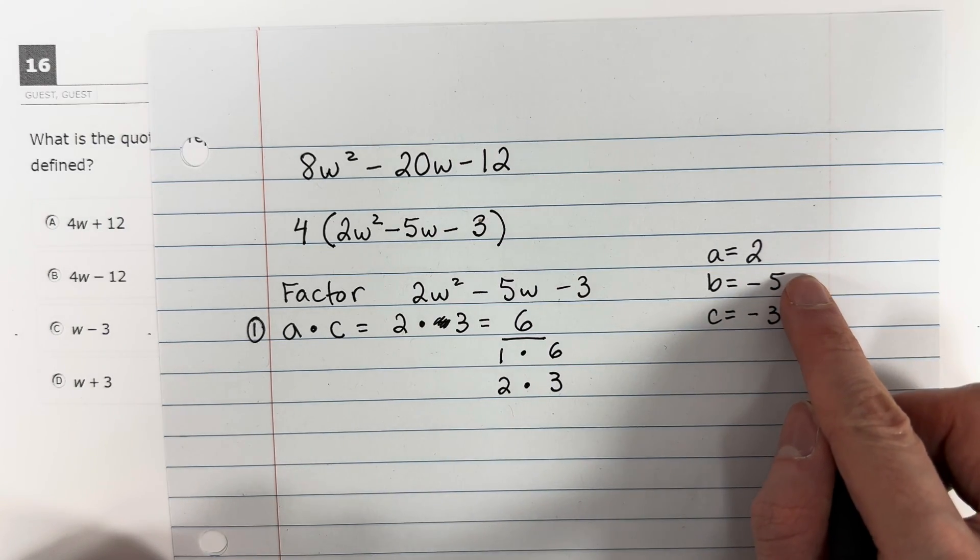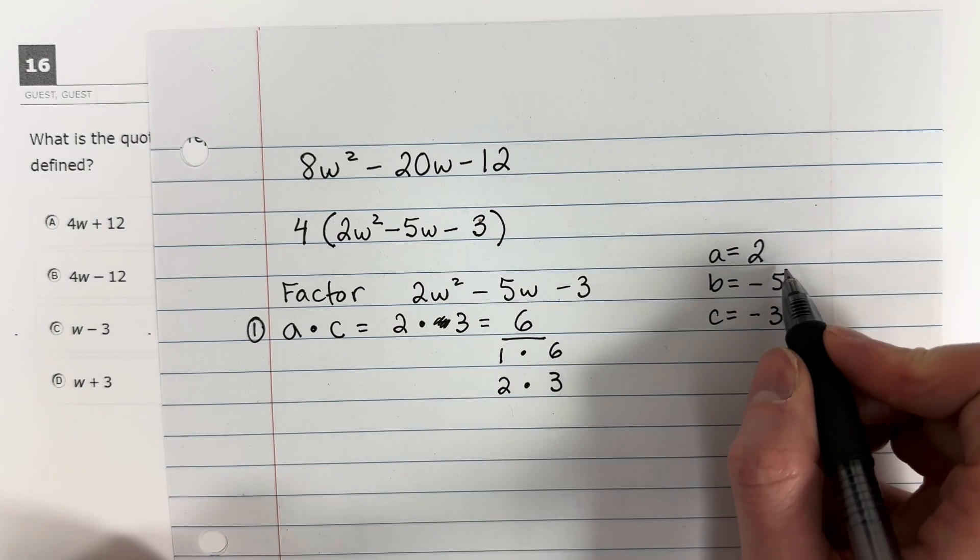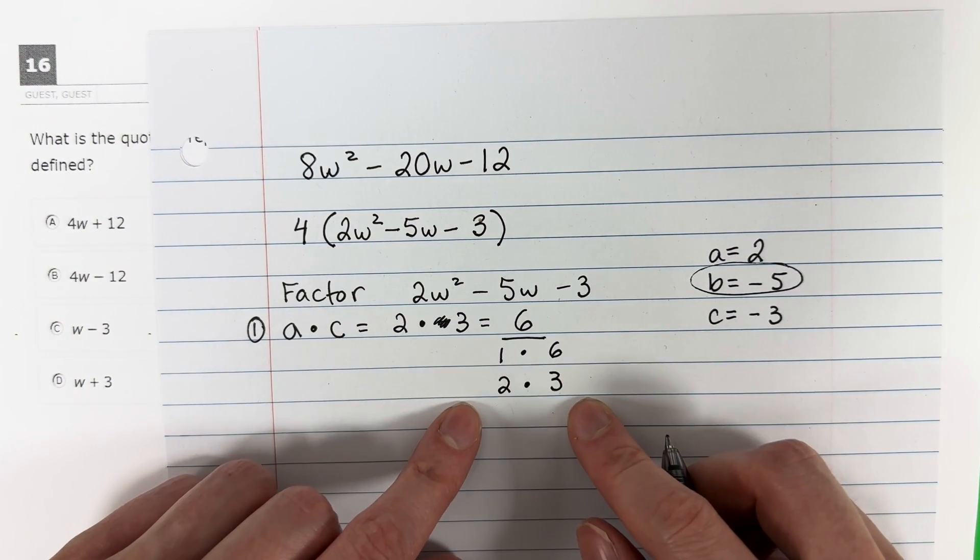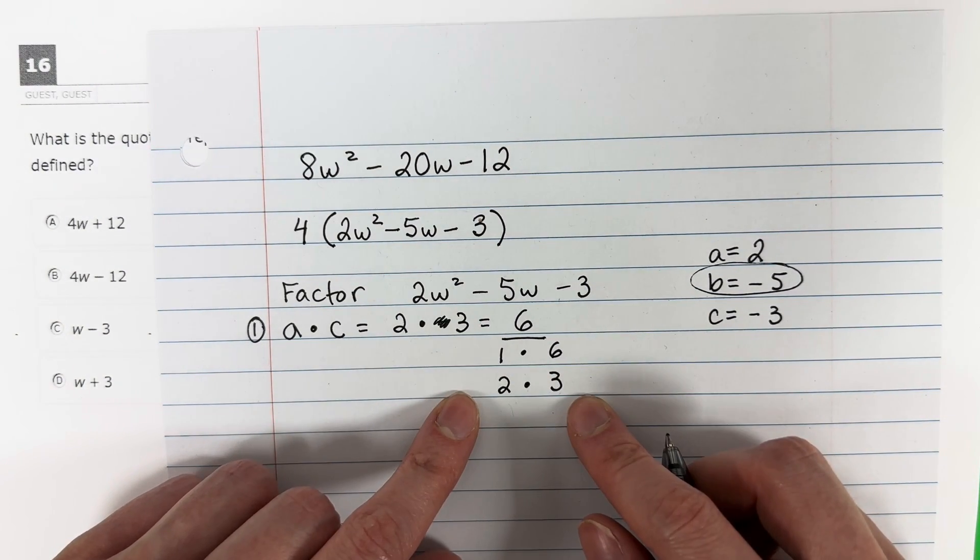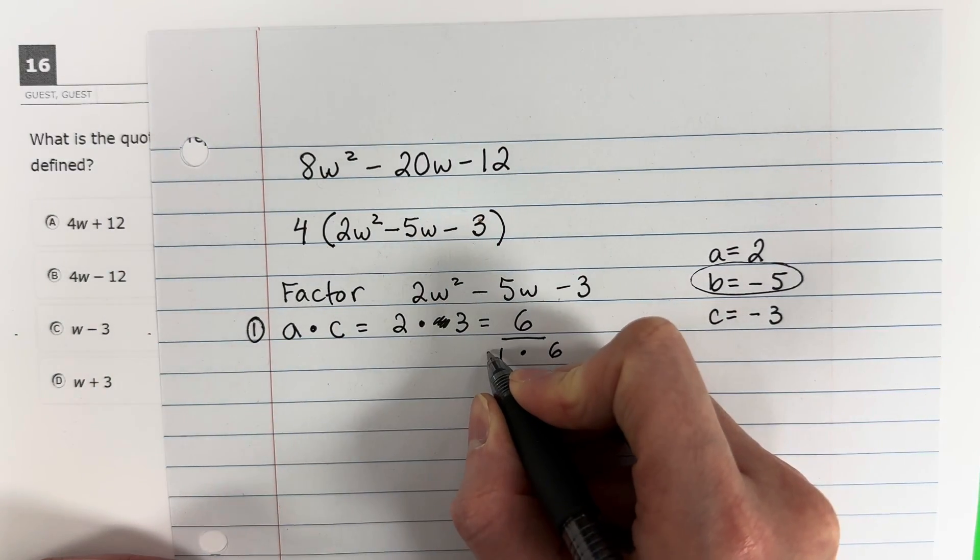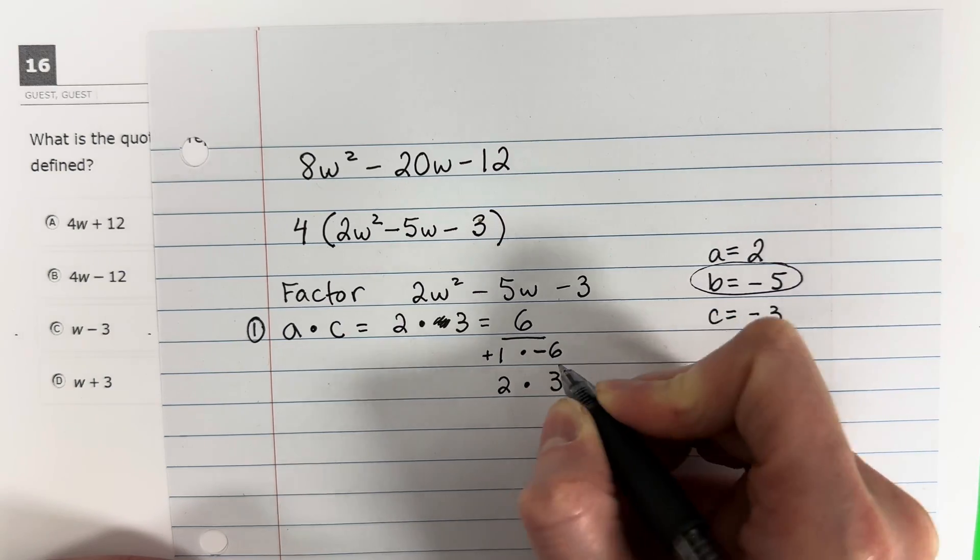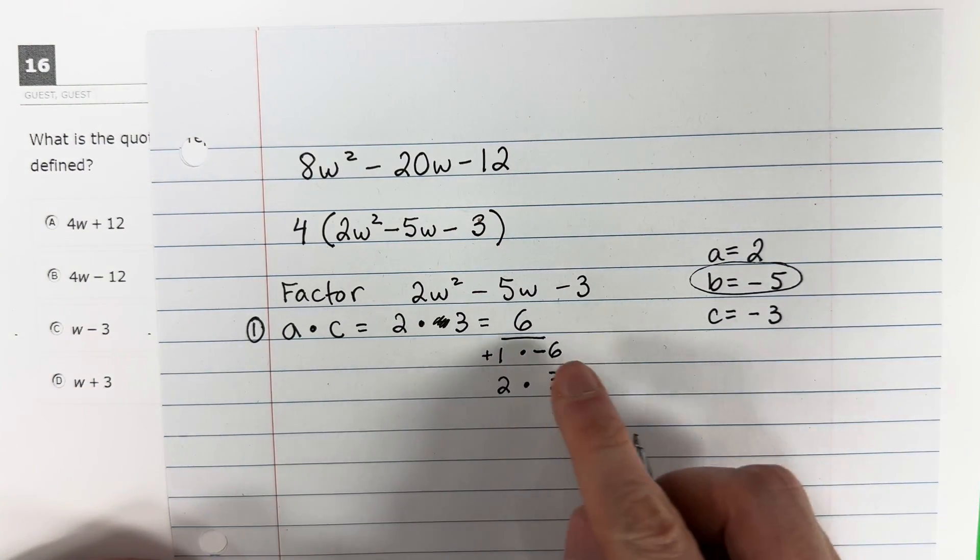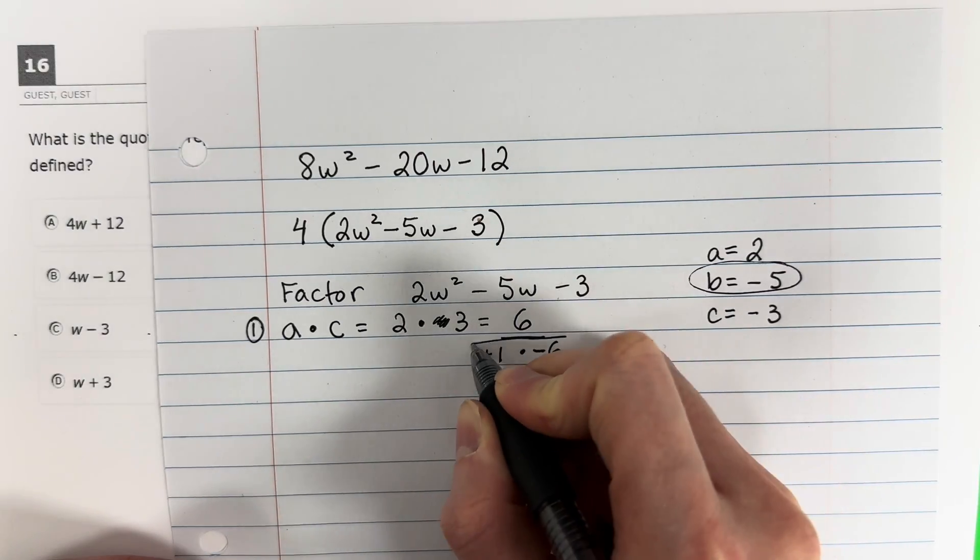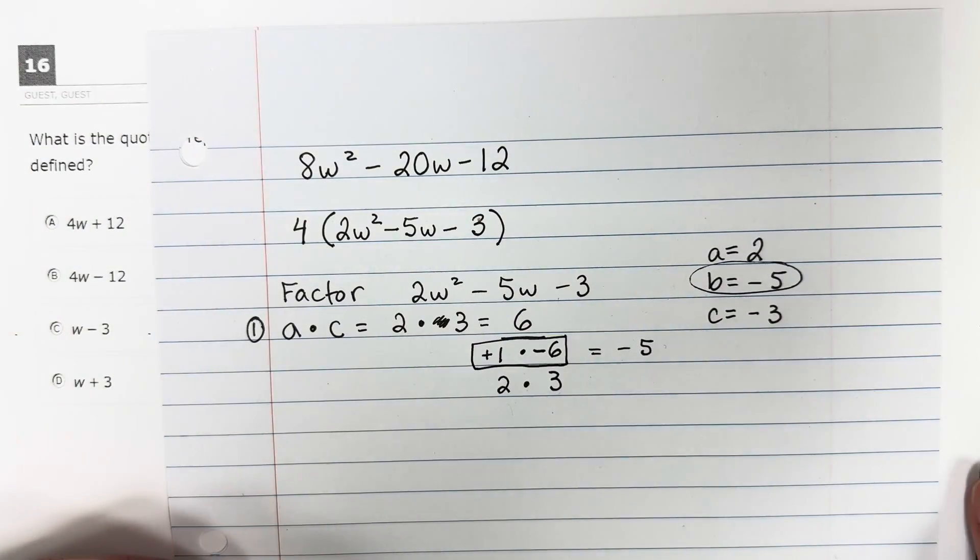What I want is the B, so I want negative 5. How can I get negative 5 from these numbers? What can I add or subtract to get negative 5? Well, to get negative 5, I would need to do positive 1, negative 6. 1 minus 6 is negative 5. So this is the pair that I want.